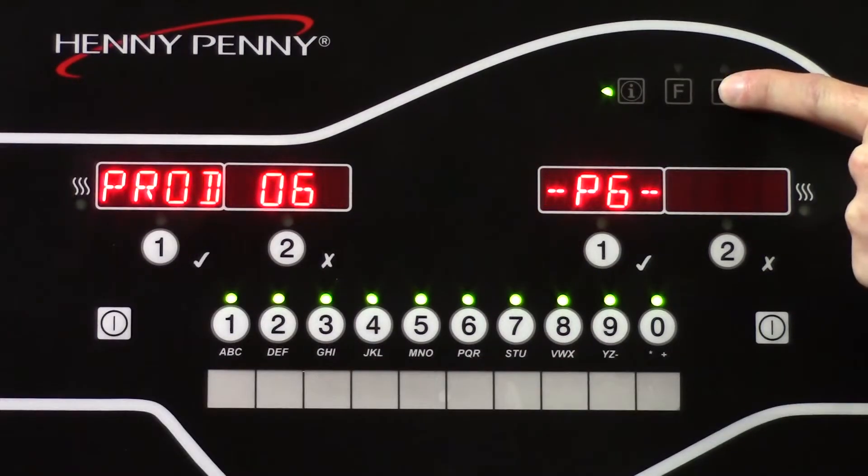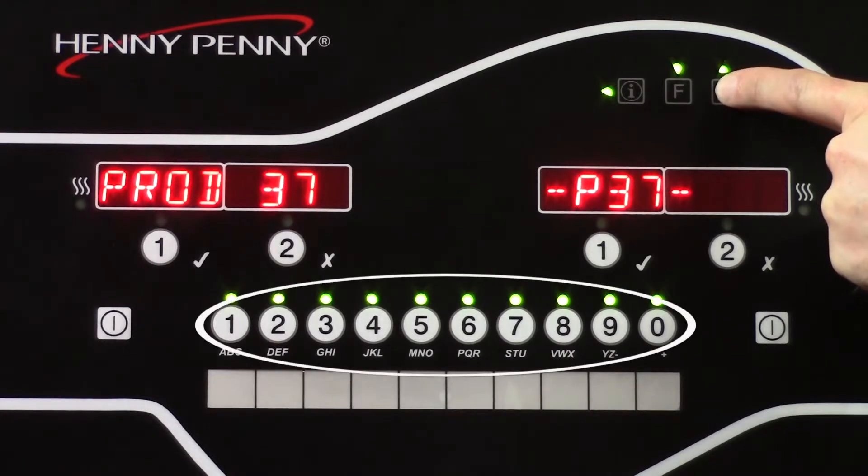The Evolution Elite control can hold up to 40 products in its memory. 10 of those 40 products can be assigned to the buttons at the bottom of the control at any given time.